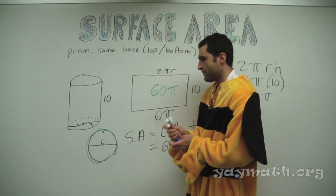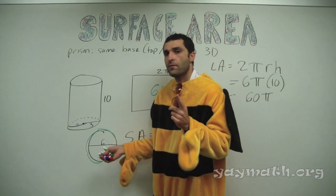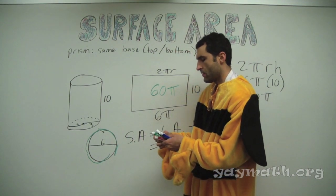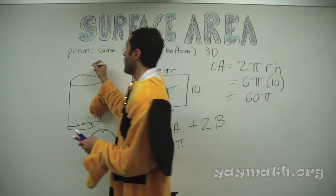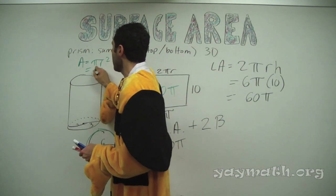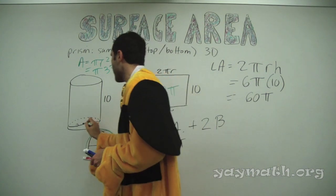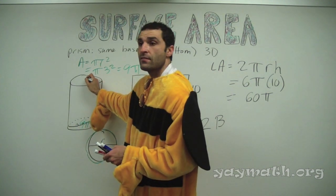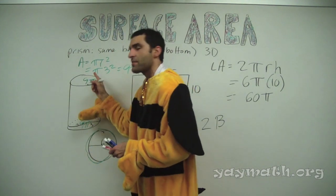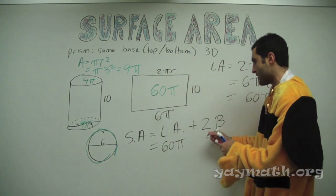All right, in case you're wondering. What's the area of the circle? 9π. How'd you get it? Because the radius is 3 and the area of a circle is π r squared — π(3²) = 9π. The total area of the two bases is 18π.